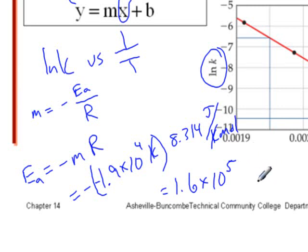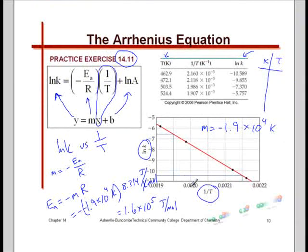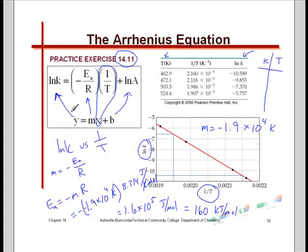Just appreciate what we've done: we took empirical data — rate constant and temperature — which have a nonlinear, exponential relationship, and using this linearized form of the Arrhenius equation, we've quantitated the abstract notion of what molecules must overcome to reach the product side. Empirical data that can be used to acquire direct mechanistic data is very useful.